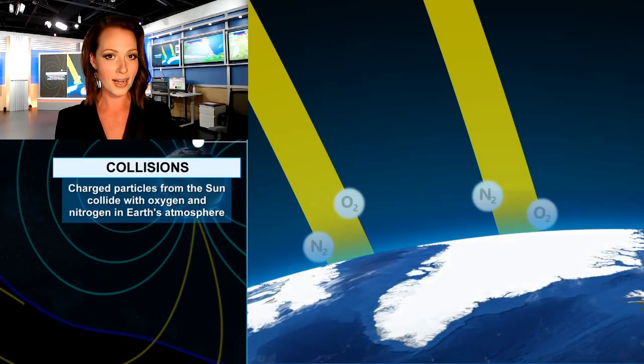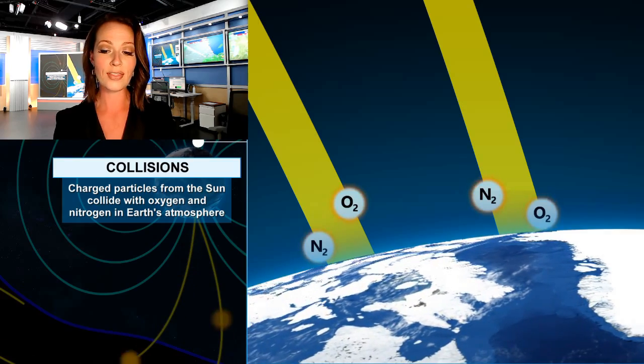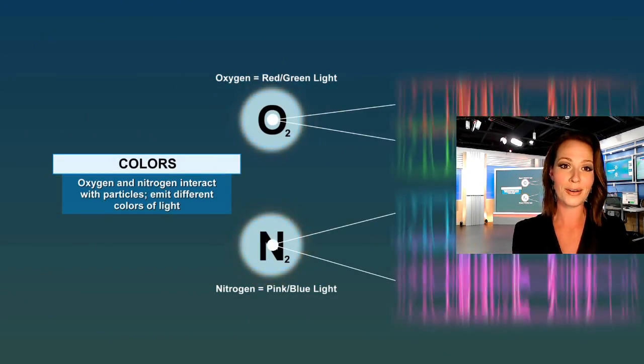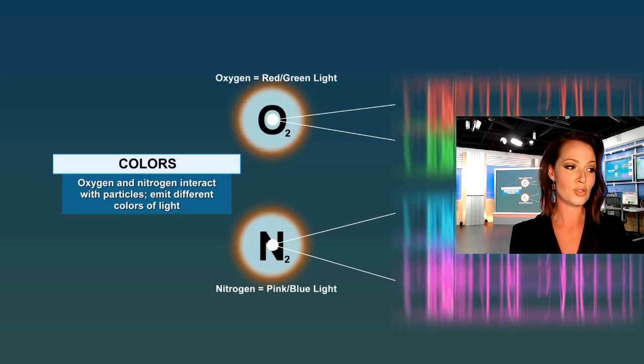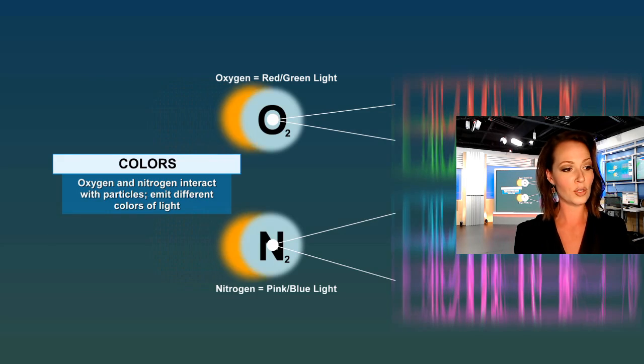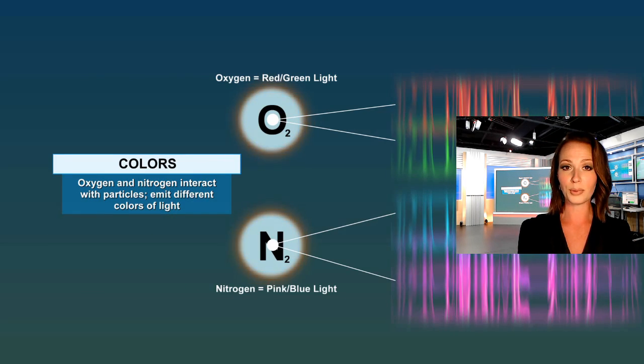We have nitrogen and oxygen that these charged particles are beginning to interact with, and that's when we actually start to see the colors of the aurora or the northern lights. As those charged particles interact with oxygen, that's when we see red and green light, and when they interact with nitrogen, that's when we see pink and blue light.